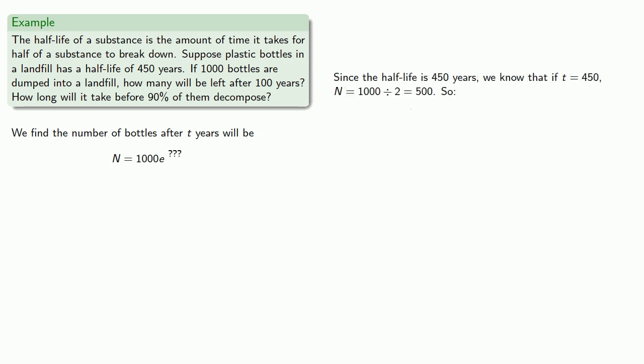Since the half-life is given as 450 years, that tells us that if t equals 450, the number is going to be half, 1,000 divided by 2, or 500. And so this gives us another equation.